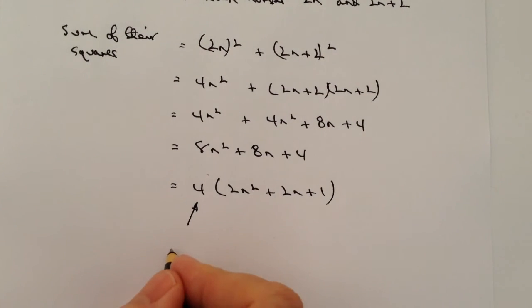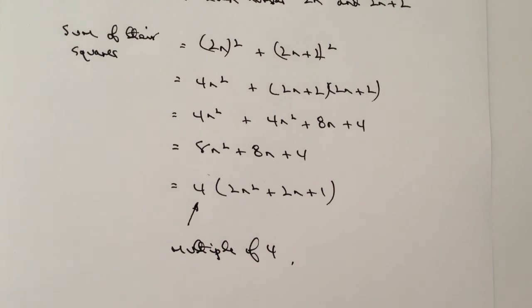So therefore, what this is saying is that because I'm able to factorize 4 out, then it's going to be a multiple of 4. Okay, I hope that's been okay for you. Please do have a look at the questions on the site, and I look forward to seeing you inside the next video.